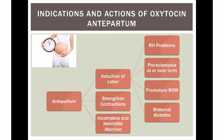Oxytocin is used for the initiation and improvement of uterine contractions. Therefore, it is used in the induction of labor for patients that have a medical indication for the initiation of labor, such as RH problems, preeclampsia at or near term, maternal diabetes, or premature rupture of membranes.